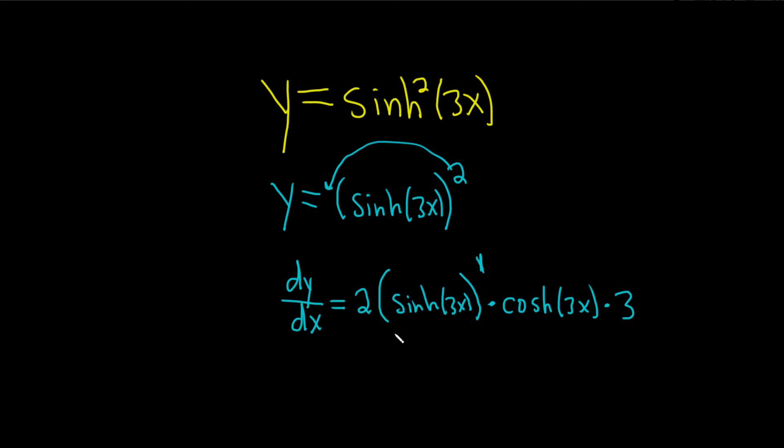It's just two chain rules. The last thing to do is combine these: two times 3 is 6. So this is 6 times sinh of 3x cosh of 3x. And that is the final answer.